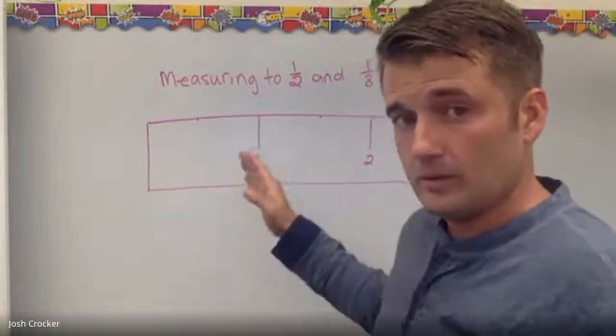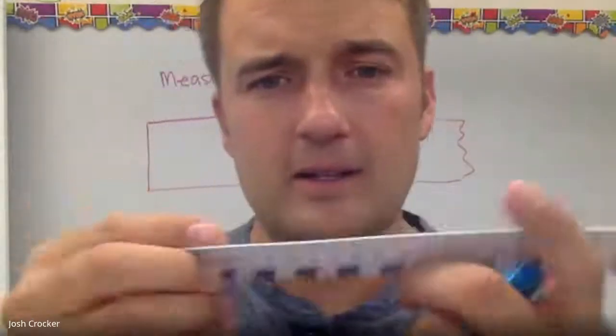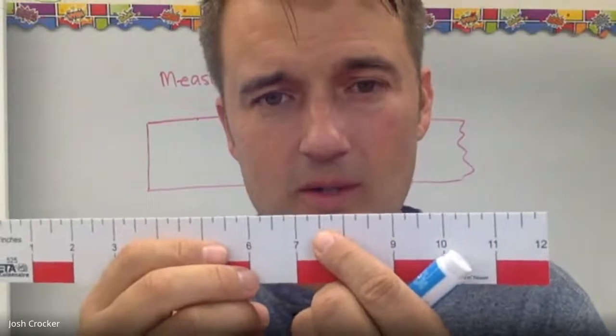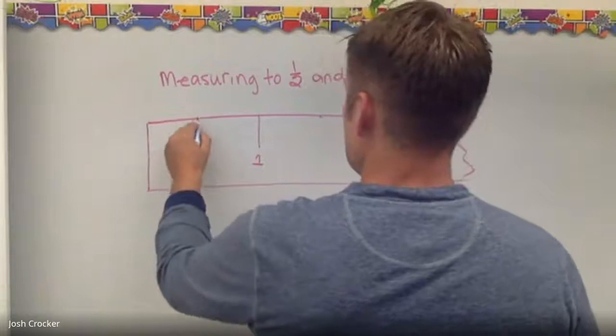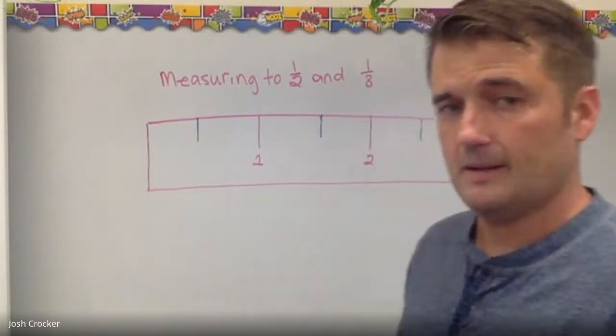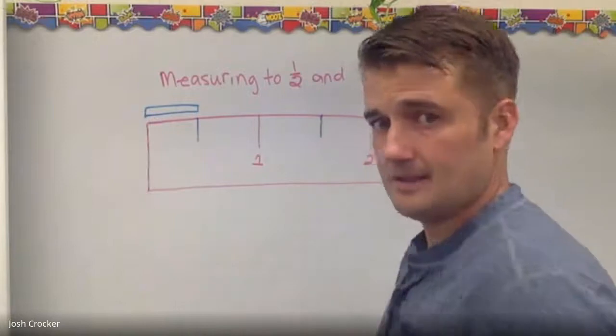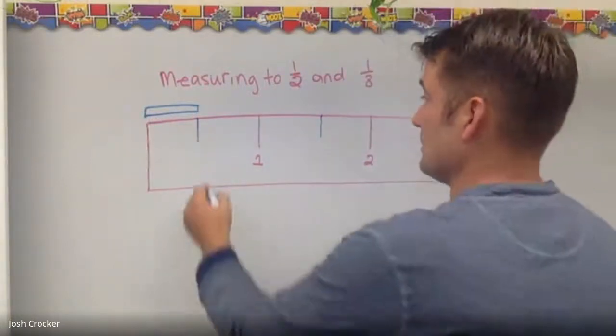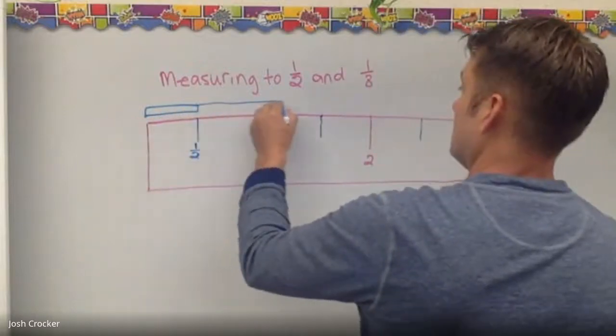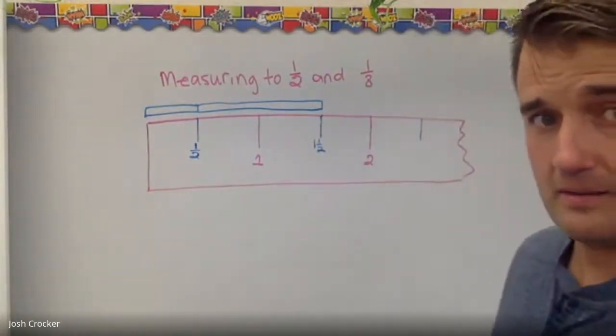So on a ruler, whole inches will always be marked and there will be another line and it will be the longest line—as those are centimeters that's upside down—it'll be the longest line and it'll be in between the whole inches and that's the half inch line. So that's right here. Okay. So if I had something that came to that, you know, stick maybe, that stick would be a half inch long. Okay, if that stick went further, that stick would be one and a half inches long. Okay, and so on and so forth.